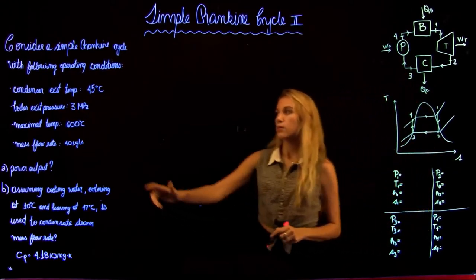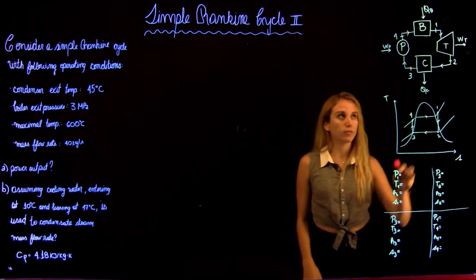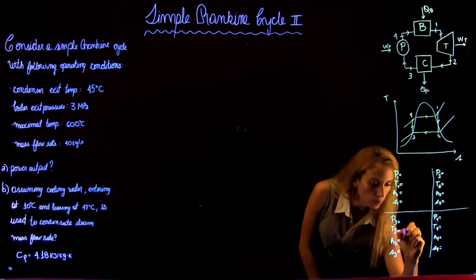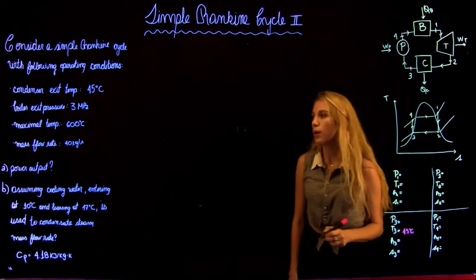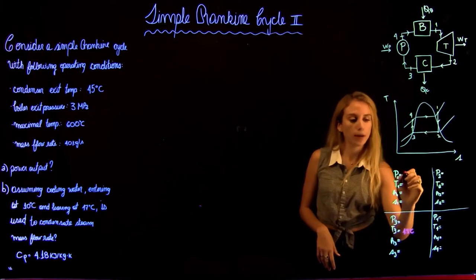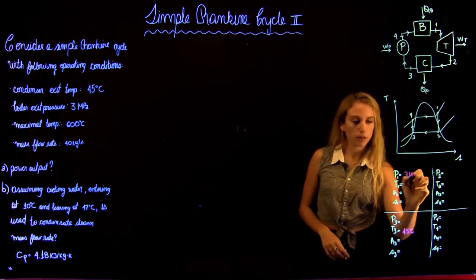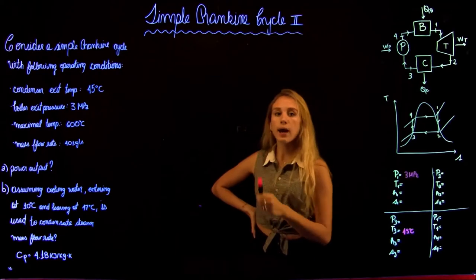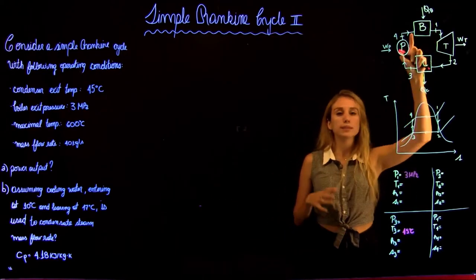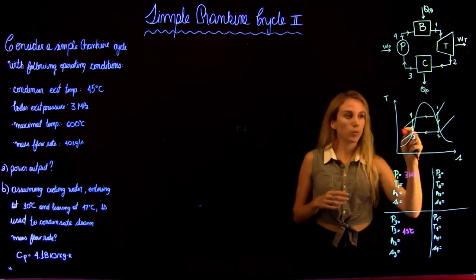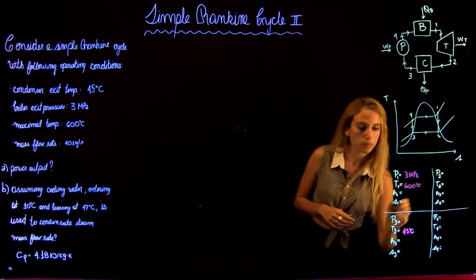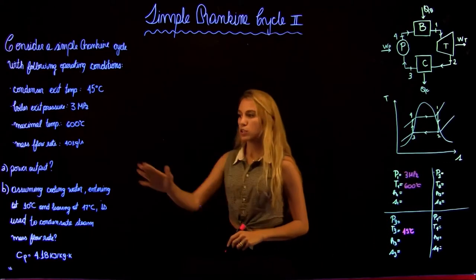We are given a condenser exit temperature of 45 degrees Celsius, so T3 equals 45°C. The boiler exit pressure P1 is equal to 3 MPa. We are also given a maximum temperature of 600 degrees Celsius, so at the exit of the boiler — as we can see in the T-S diagram — and we are also given the mass flow rate.